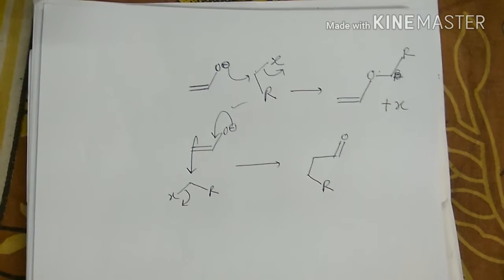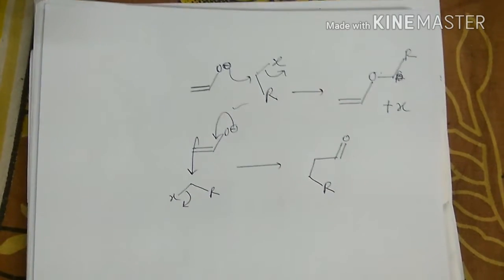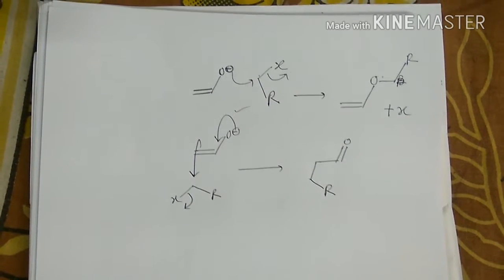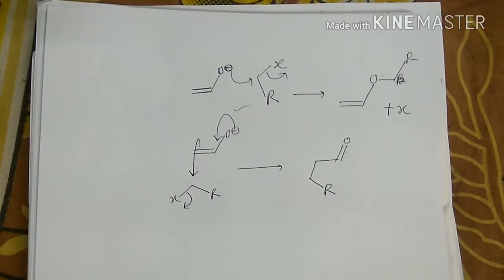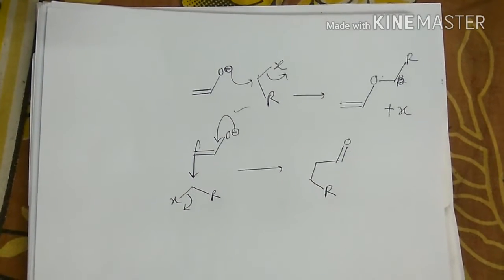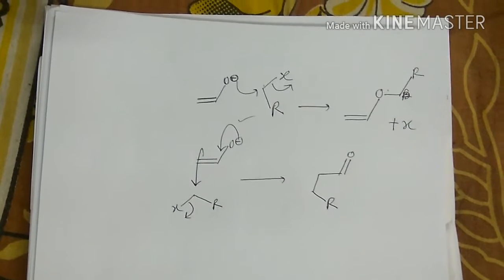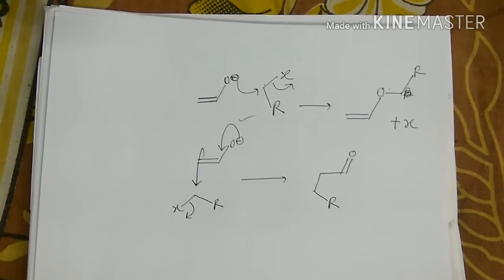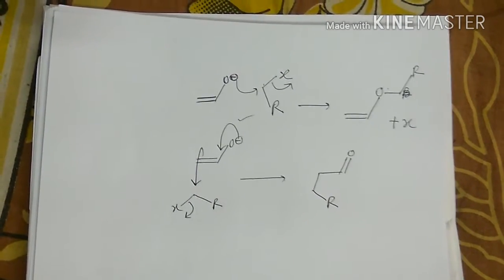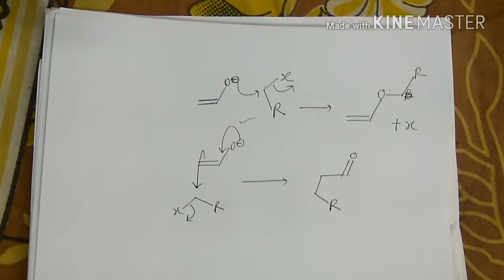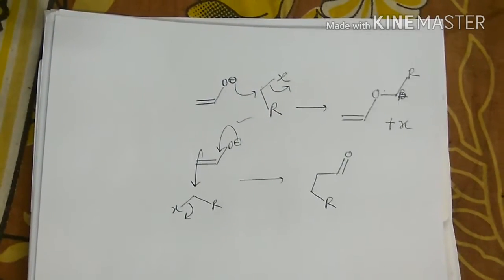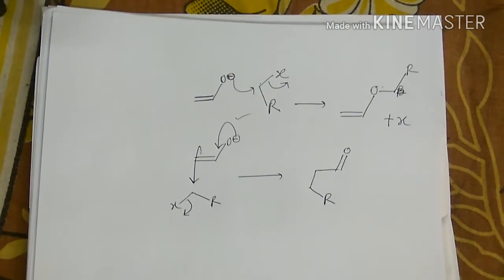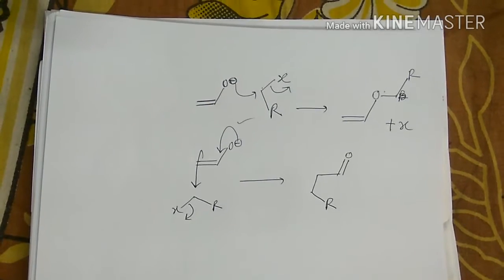We know that if the nucleophile is stabilized by solvent interaction, the energy of its HOMO is reduced, so it becomes less nucleophilic. In other words, it has to break the solvent shell to attack the electrophile. We need to find out how the solvent–nucleophile interaction changes as we go from polar aprotic to polar protic to non-polar solvent.